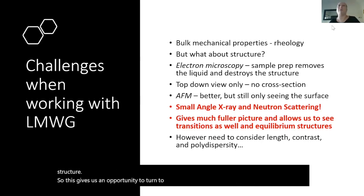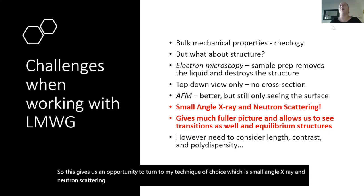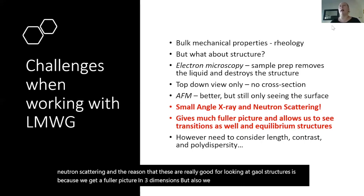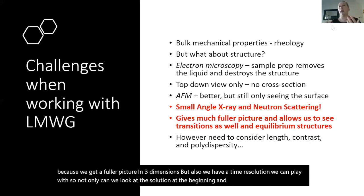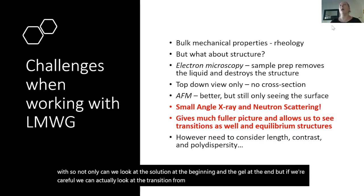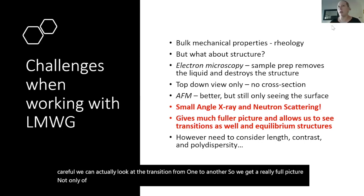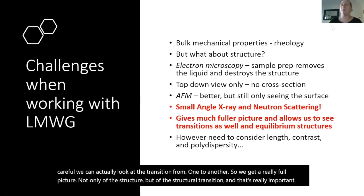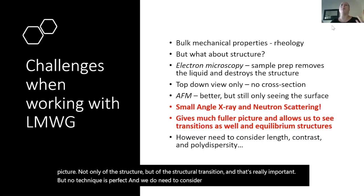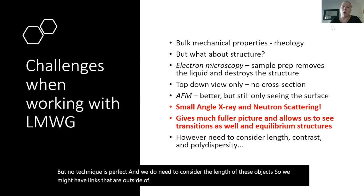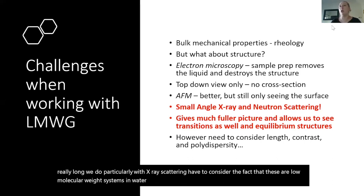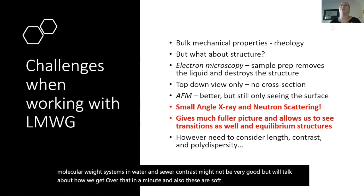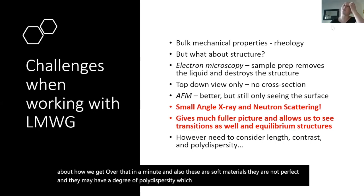Another problem with electron microscopy is we're looking down on a two-dimensional structure, but these are 3D networks — electron microscopy tells us nothing about things like the cross-section, so it can be quite misleading to rely on microscopy alone. We could turn to atomic force microscopy, which is better — we can work in a liquid — but again we're really only skimming the surface and not probing the network structure. This gives us an opportunity to turn to my technique of choice: small angle X-ray and neutron scattering. These are really good for looking at gel structures because we get a fuller picture in three dimensions, and we also have time resolution — not only can we look at the solution and the gel but we can look at the transition from one to another. No technique is perfect though: lengths may be outside scattering range, contrast may be low in water, and polydispersity can make data fitting more challenging.